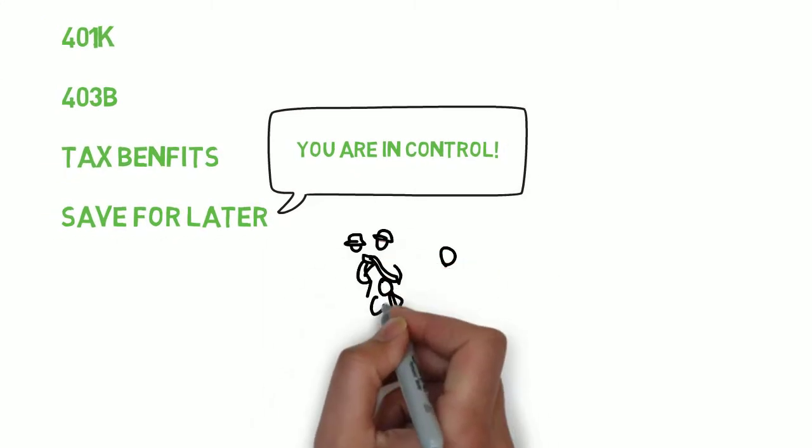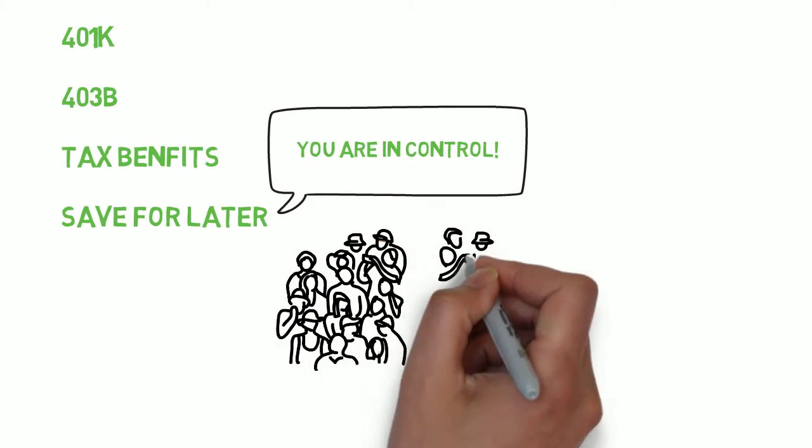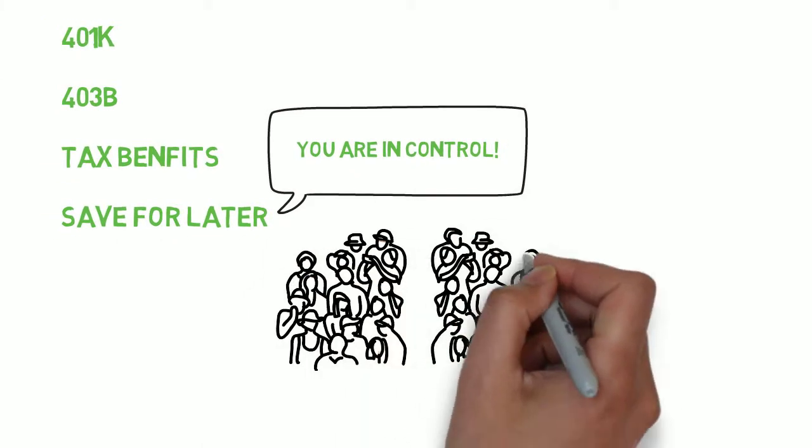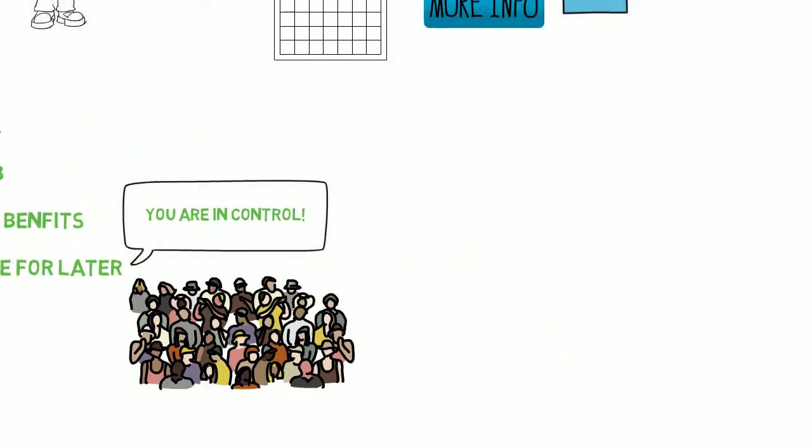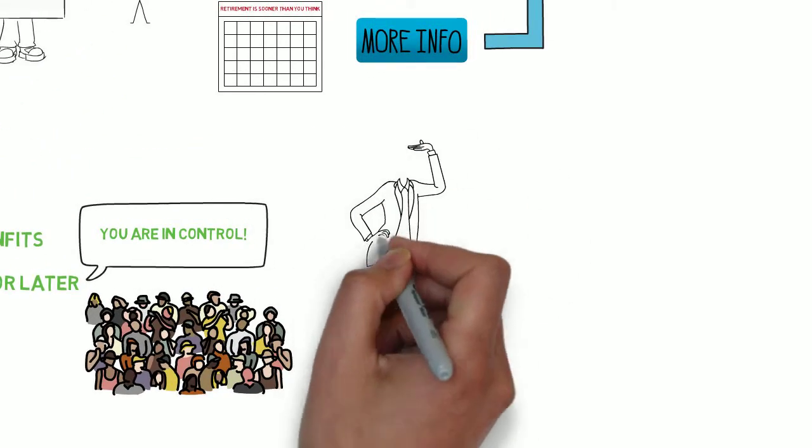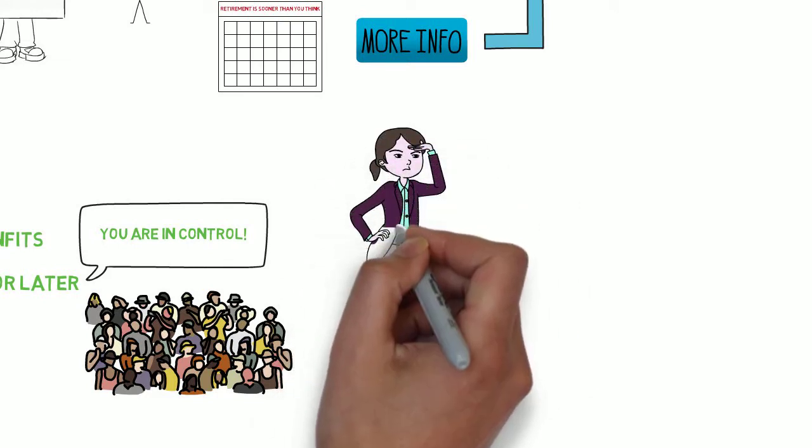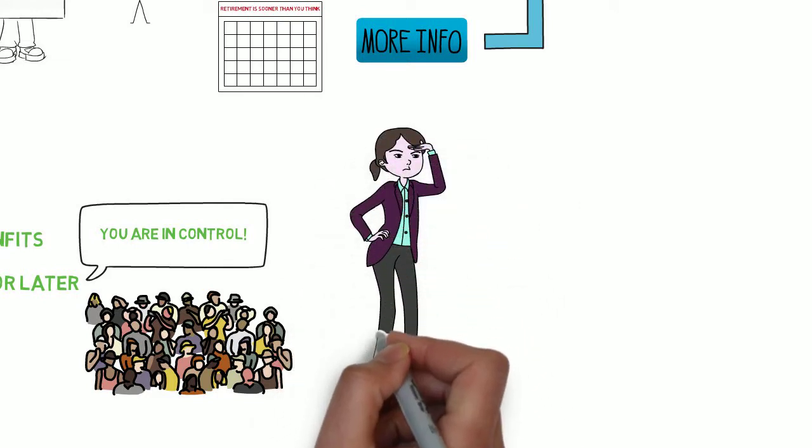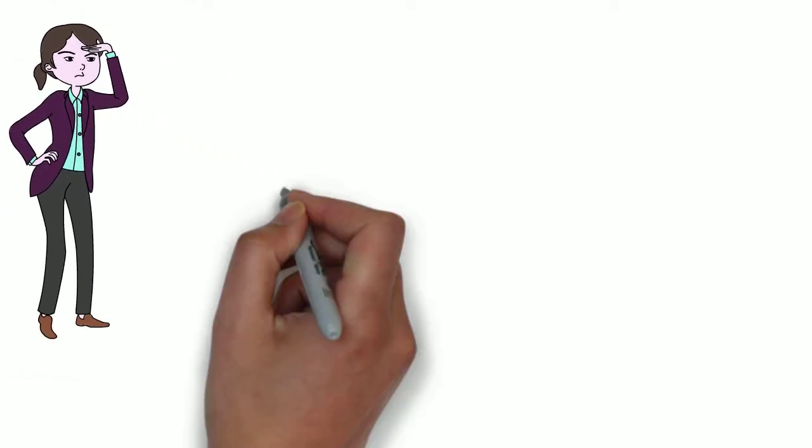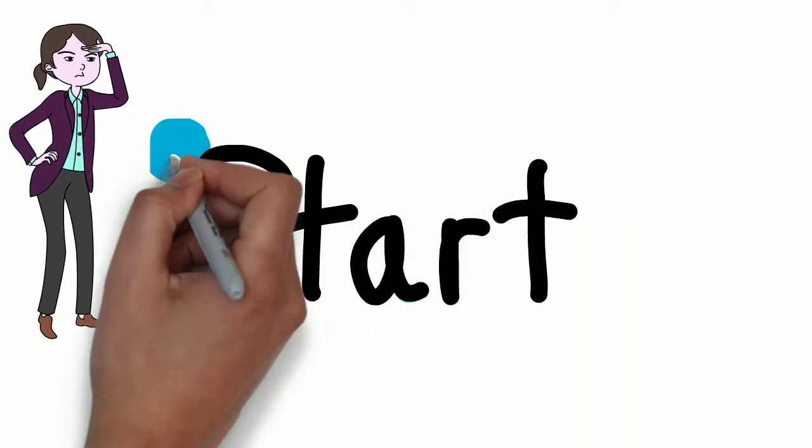Today, most people have some kind of deferred contribution plan, and very few companies use pensions. So, what do you have? A pension? Social Security? 403B? Well, if you're a teacher in Virginia, you have at least two out of three. And if you're a new teacher, you probably have all three.